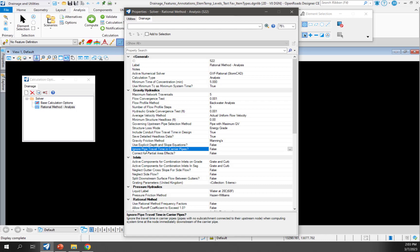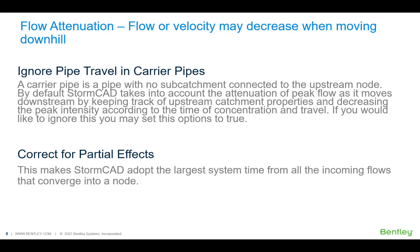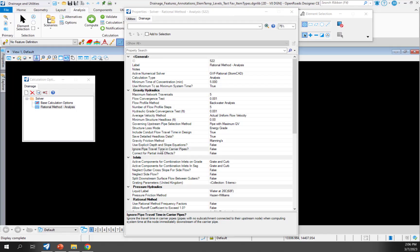Next, I'll look at ignore pipe travel time in carrier pipes and also correct for partial area effects. These settings relate to how flow or velocity may decrease when moving downhill due to flow attenuation. A carrier pipe is a pipe with no subcatchment connected to the upstream node. By default, StormCAD takes into account the attenuation of peak flow as it moves downstream by keeping track of upstream catchment properties and decreasing the peak intensity according to the time of concentration and travel. This could result in flow or velocity that decreases as you move downhill. If you would like to ignore this specifically in a carrier pipe, you can set this option to true. Correct for partial effects makes StormCAD adopt the largest system time from all of the incoming flows that converge into a node. I'm going to leave both of these set to false.